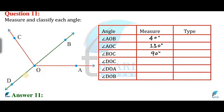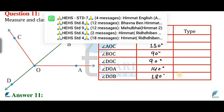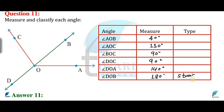And if we talk about D,O,C — this angle is also 90 degrees. You can see a straight line here. And if we talk about D,O,A — this angle is 140 degrees; when you measure it, you will get 140 degrees. And D,O,B — this angle is 180 degrees. So we call 180 degrees a straight angle. The 140 degrees is an obtuse angle.